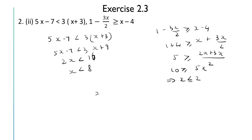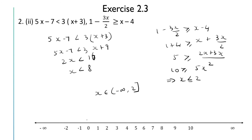So the solution set is x ∈ (-∞, 2], because x ≤ 2, meaning x can take all points less than or equal to 2, with 2 included and minus infinity open. On the number line, x < 8 covers from 8 leftward and x ≤ 2 covers from 2 leftward; the common region is x ≤ 2.